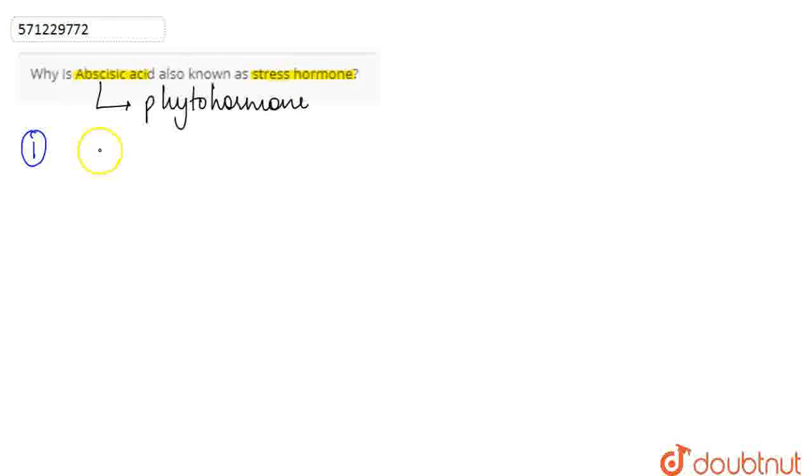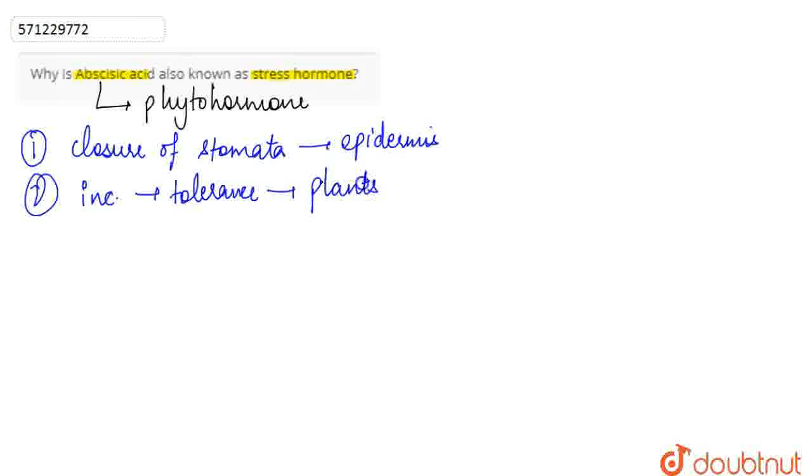Because Abscisic Acid or this hormone basically leads to the closure of stomata in the epidermis. And it also increases the tolerance of plants to various kind of stresses. So, therefore, it is called as the stress hormone because it increases the tolerance of a plant against the stressful conditions.